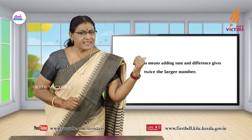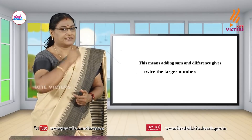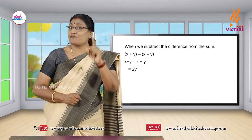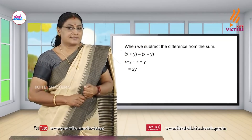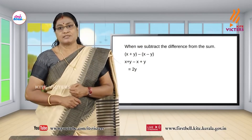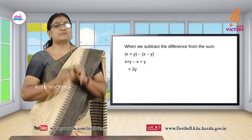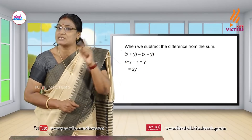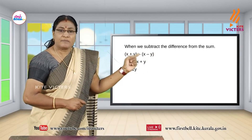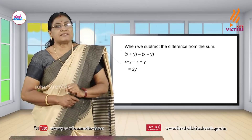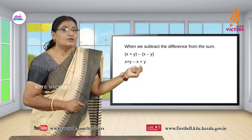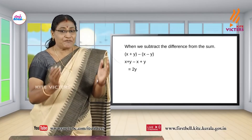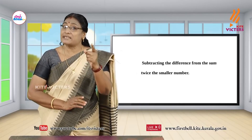Did you get Adulia's trick? Now let us see another thing: when we subtract the difference from the sum of any two numbers — x plus y minus (x minus y) — the x terms cancel, and minus of minus y becomes plus y, giving us 2y. So subtracting the difference from the sum gives twice the smaller number.